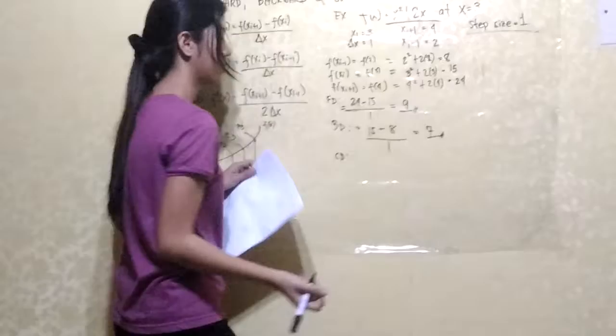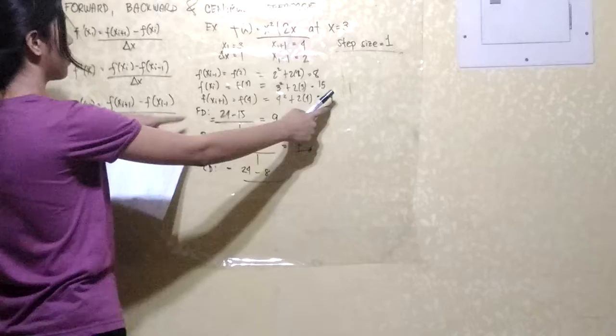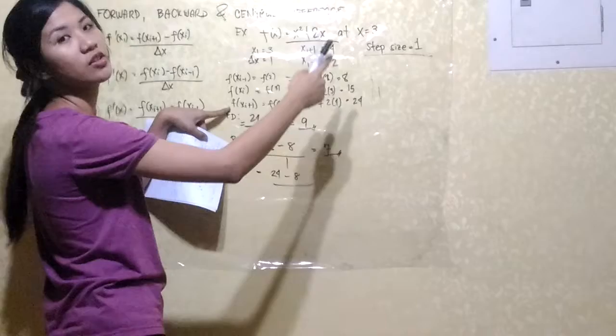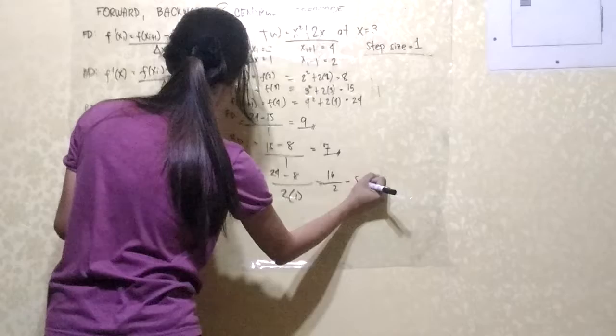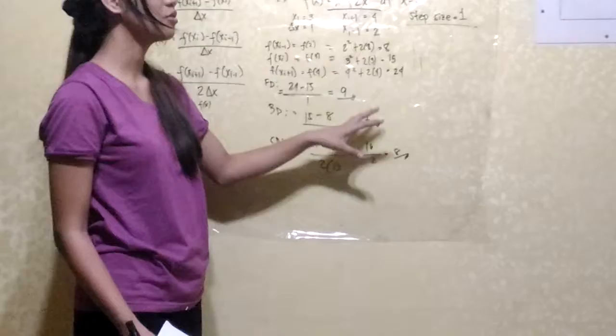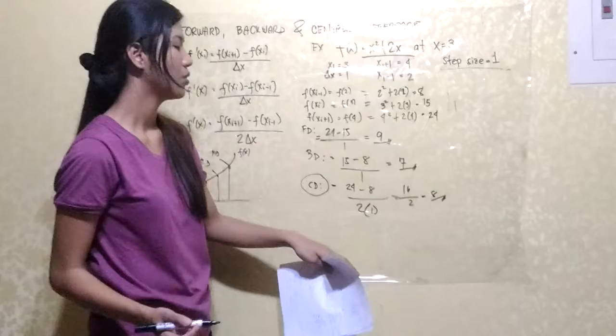For the central difference, that would be 24 minus 8, all over twice 1. So 16 divided by 2 equals 8. If we calculate this using a calculator, the closest answer is that of the central difference, which gives 8. So that covers the forward, backward, and central difference.